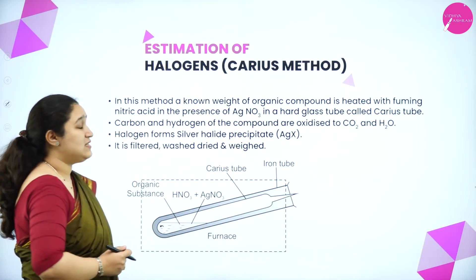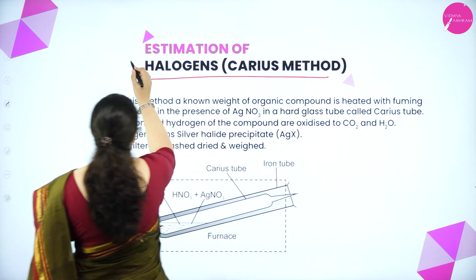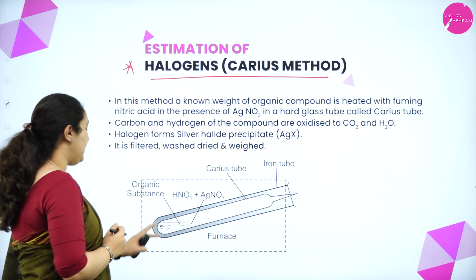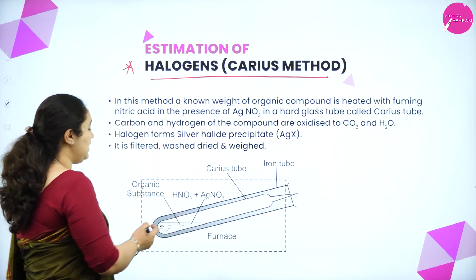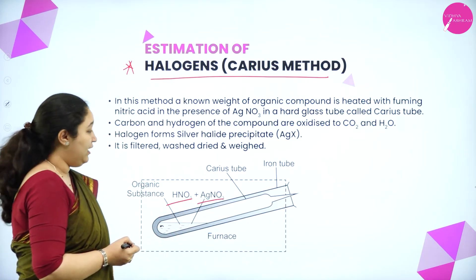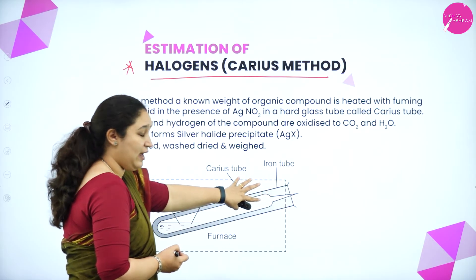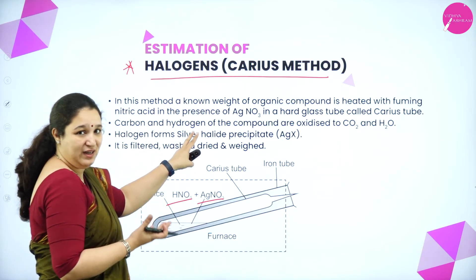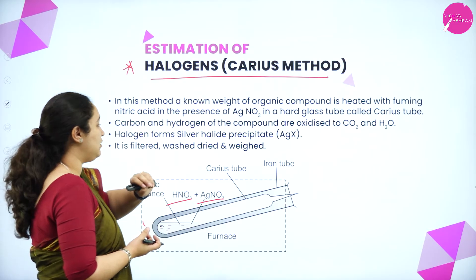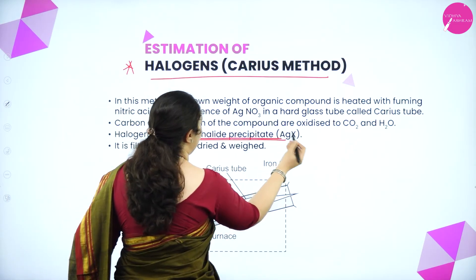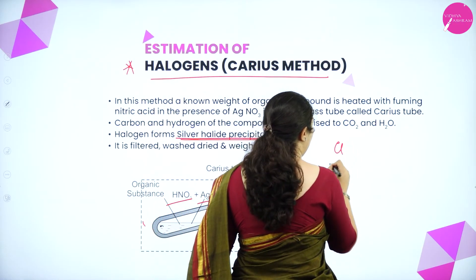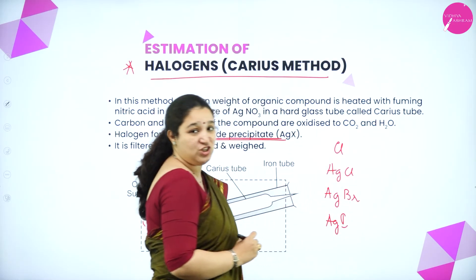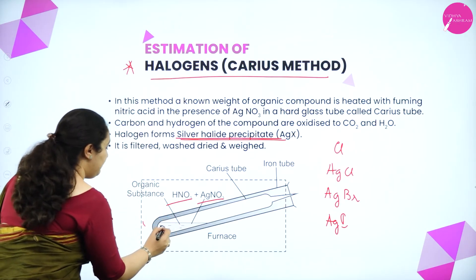Next, we go to estimation of halogens by Carius method — very important from the exam point of view, asked several times previously. Here we take the organic compound, mix it with nitric acid and silver nitrate in the Carius tube, which has an iron tube covering and is kept in a furnace. Carbon and hydrogen get converted to carbon dioxide and water when continuously heated, while halogen forms a silver halide precipitate, AgX. If halogen is chlorine you get AgCl, bromine gives AgBr, iodine gives AgI.